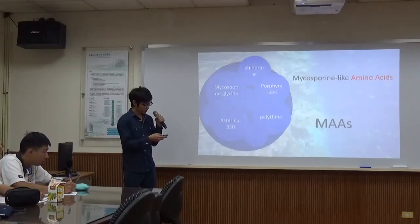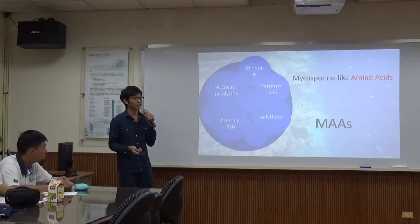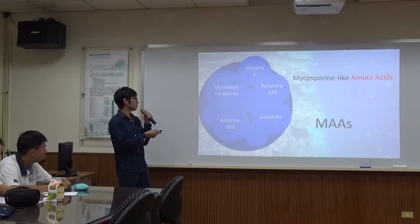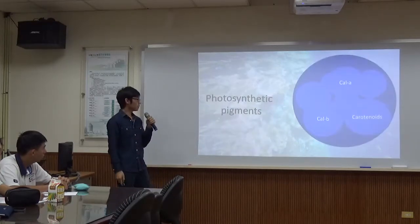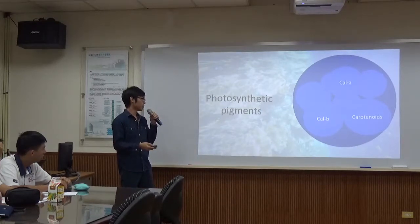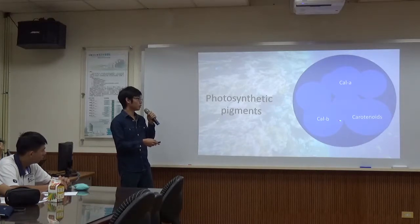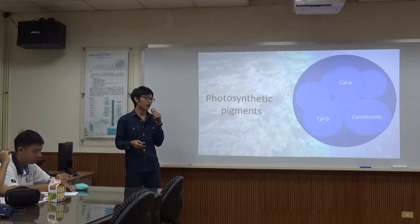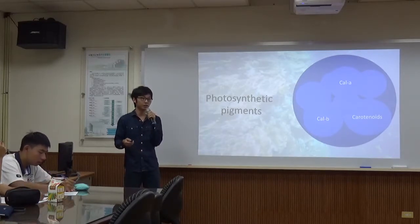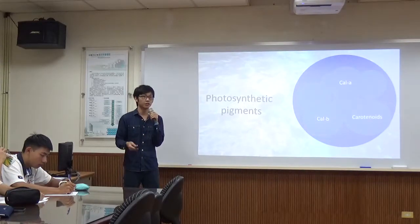Several MAAs have been identified, and we only take these five compounds to conduct our experiments. And what is photosynthetic pigment? For example, chlorophyll A, chlorophyll B, carotenoids, and so on. Photosynthetic pigments help the light harvesting system, like Photosystem I and Photosystem II, to collect solar energy from irradiation.